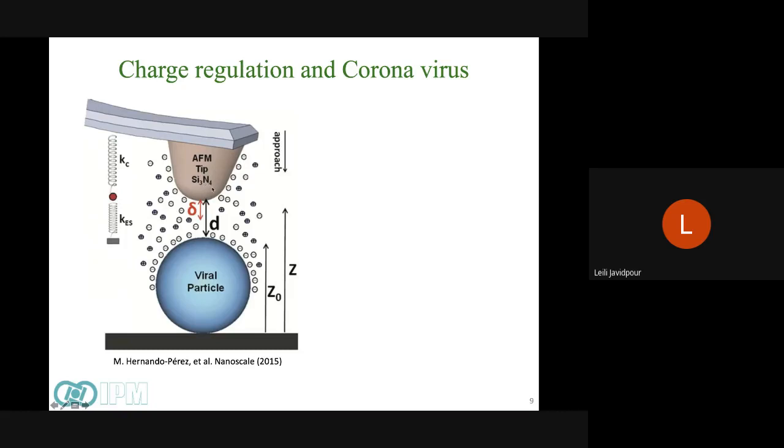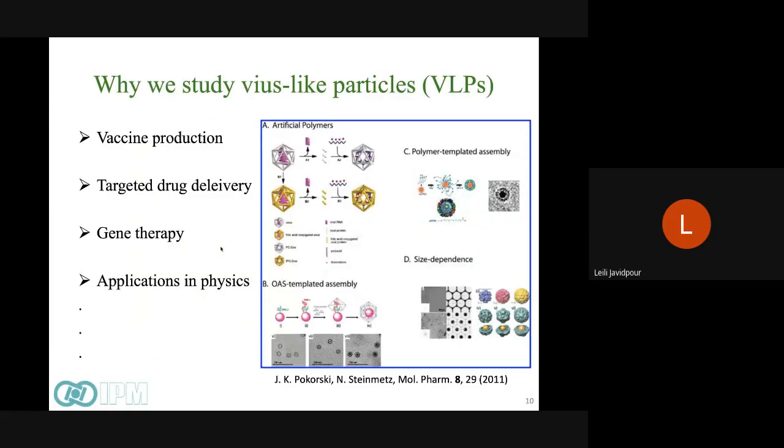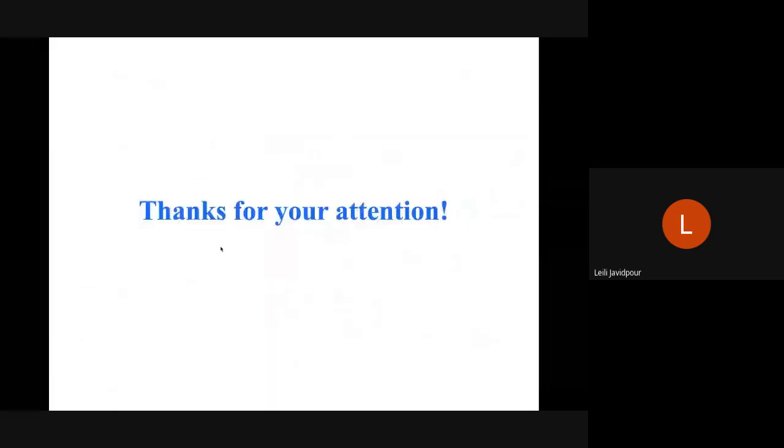Then we have used charge regulation currently for some problem which has been done experimentally. We have been trying to find interaction between an AFM tip and a viral particle. And now we are working on coronavirus using charge regulation theory, which is more precise and accounts for dissociation or association of hydrogen charge. And virus-like particles are, in general, important, specifically in medical sciences. For example, virus-like particles do not have wild-type genome inside them, and so they are useful for vaccine production, targeted drug delivery, gene therapy, and so on. Thank you all for your attention.